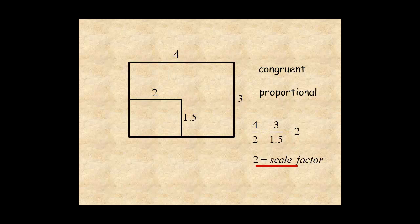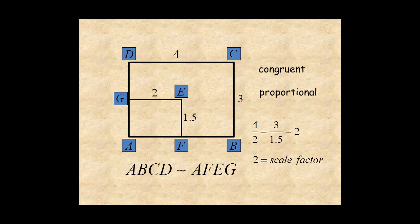So ABCD is similar to AFEG. When you name similar polygons, list the corresponding vertices in the same order. This wavy line is the symbol for similar.